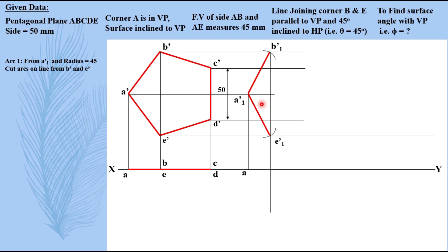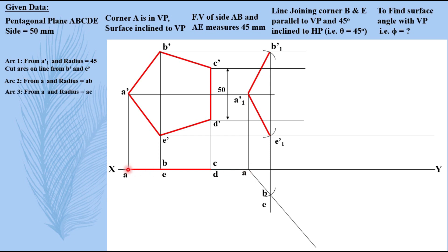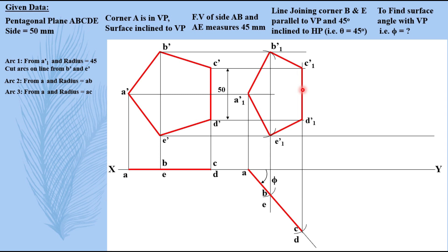Now if these two sides are reduced, AB will be inclined. Take compass with AB as radius, keep compass at A, cut on the projector, name the point, and join the line. Then take the complete distance A to C in the compass, keep compass here, cut it, name the point, and draw the second top view. Take the projector up — this is the required angle phi which has to be found out; you can measure it now. By taking the projector up, by intersection you obtain C1' and D1'. Join them in sequence and you have completed the second front view, that is the reduced shape.